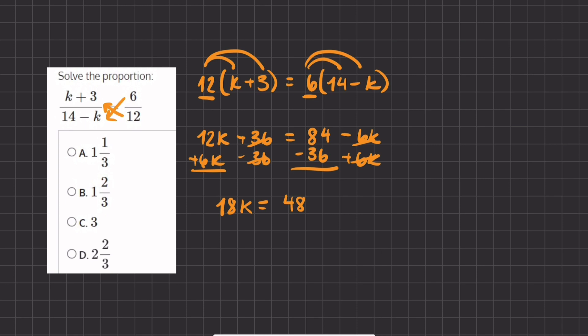Now in order to find the value of k, we are going to isolate it by dividing 18 on both sides. We have k equals 48 divided by 18. We can simplify this fraction by dividing by 2, the top and bottom.